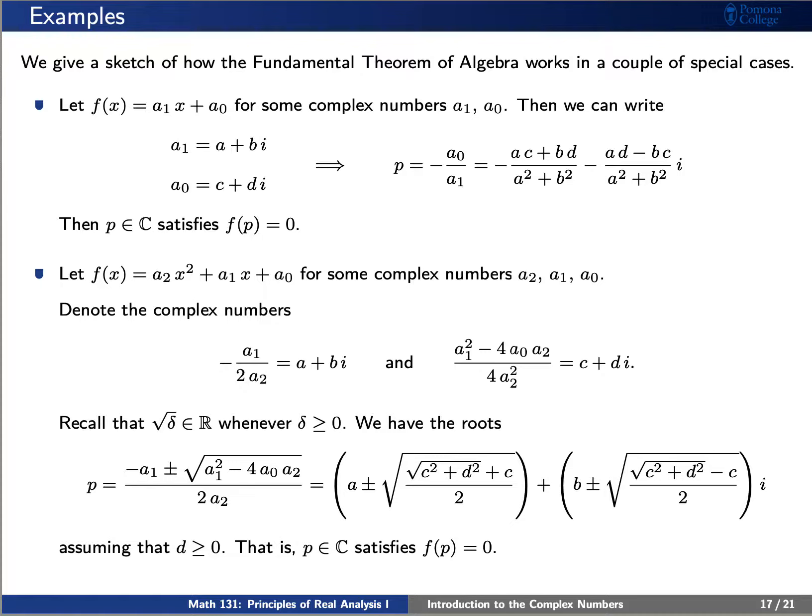Recalling that whenever delta is a positive real number, the square root of delta is also a real number, so we can explicitly express the root of this polynomial f of x in terms of the complex number p you see here on your screen.